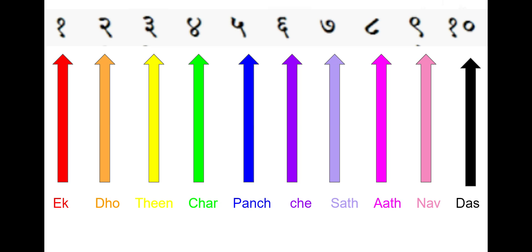This is Sindhi now. The first one is Ek. The second one is Do. The third one is Teen. The fourth one is Chaar. The fifth one is Paunch. The sixth one is Che. The seventh one is Saath. The eighth one is Aath — you should remember seven and eight. Nine is Nav. Das is ten.